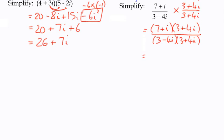So the top number here becomes 21 plus 28i plus 3i plus 4i squared. And on the bottom, we know that the difference of two squares is going to be the first term squared, which is 9, minus the second term squared, which is 16i squared.